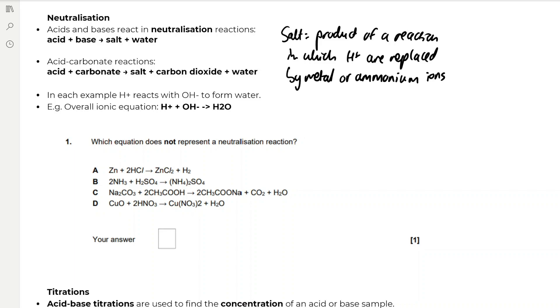If you have a look at this question, which equation does not represent a neutralisation reaction? In a neutralisation reaction, an acid has to react with a base, or we have to form water. As you can see from A, a metal is reacting with an acid, so that's not an acid-base reaction. And we're not forming water, so that's not a neutralisation reaction. So the correct answer is A. If we have a look at B, C, and D, we can see that we're forming H2O in C and D, and in B, ammonia is reacting with sulphuric acid to form a salt, so that's a neutralisation reaction.